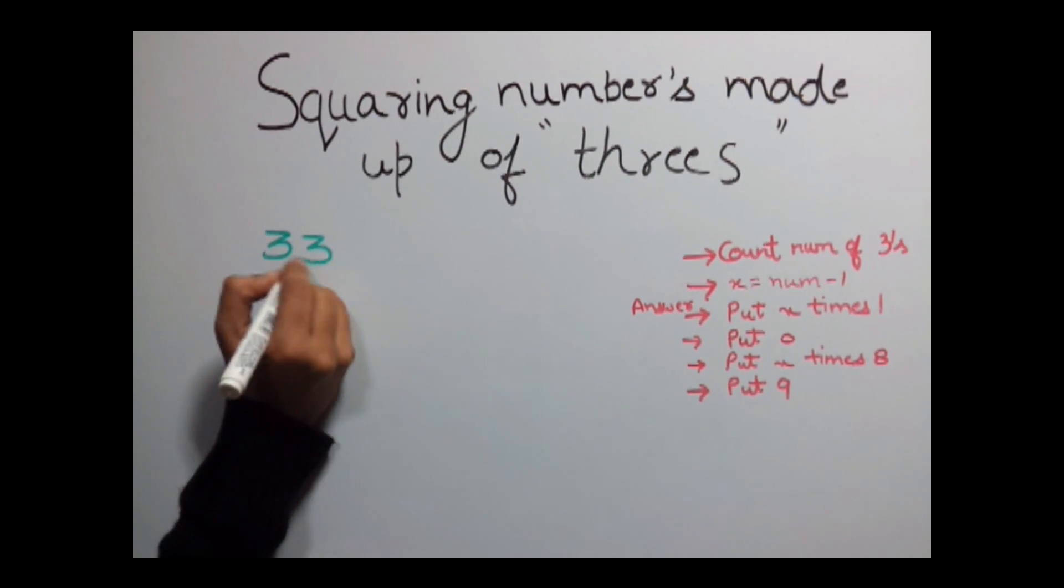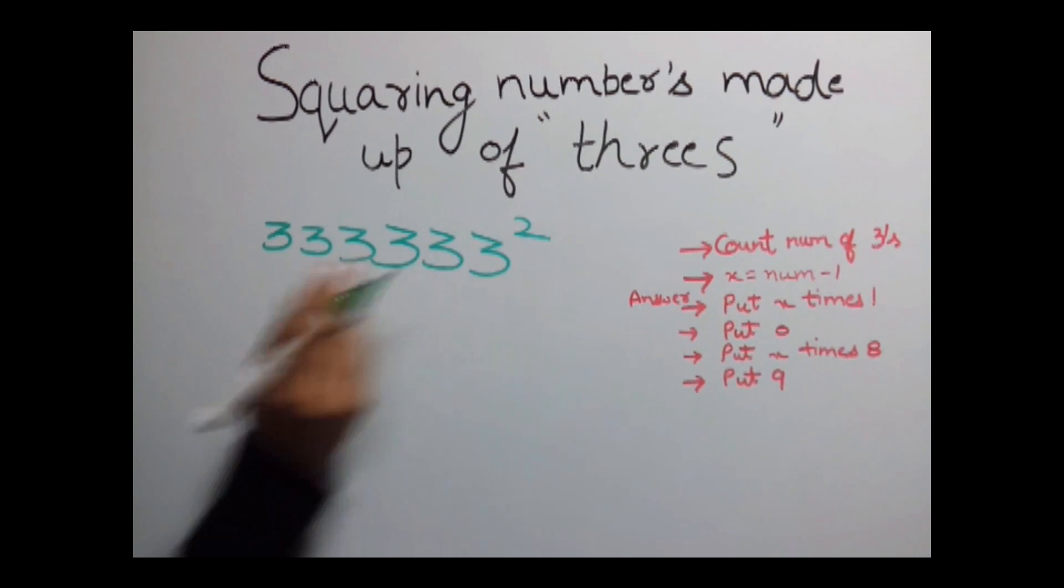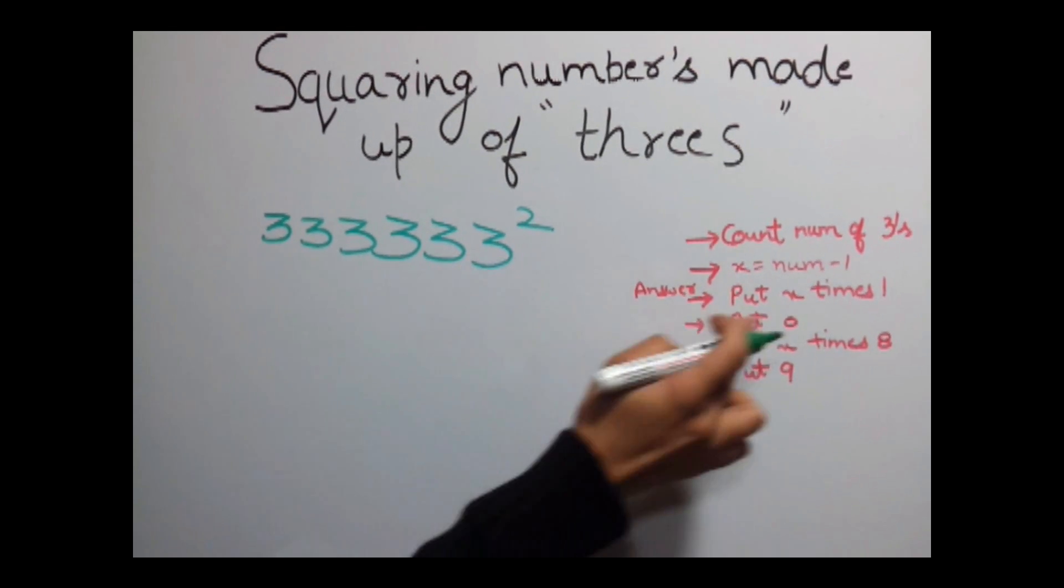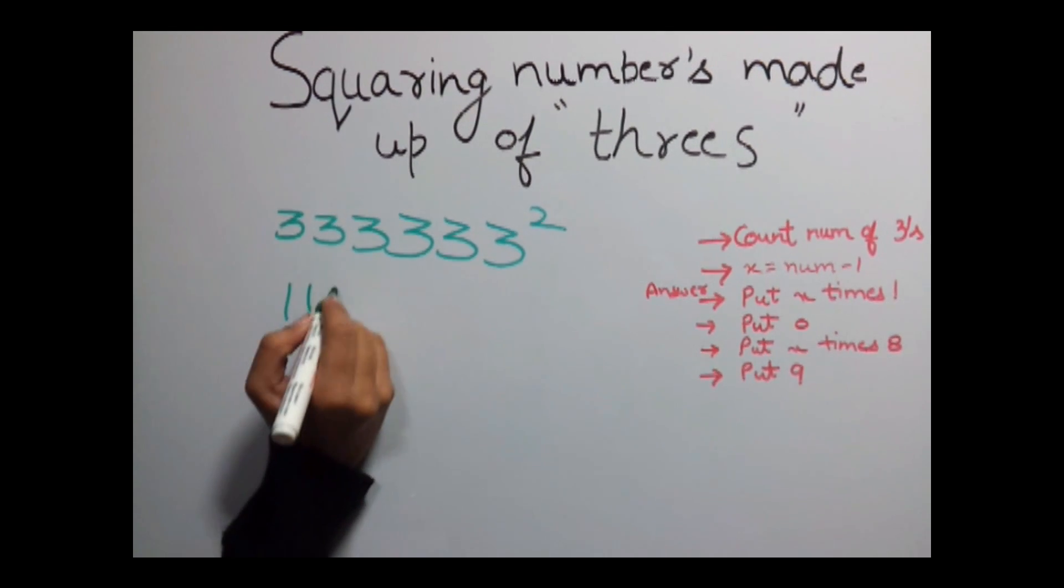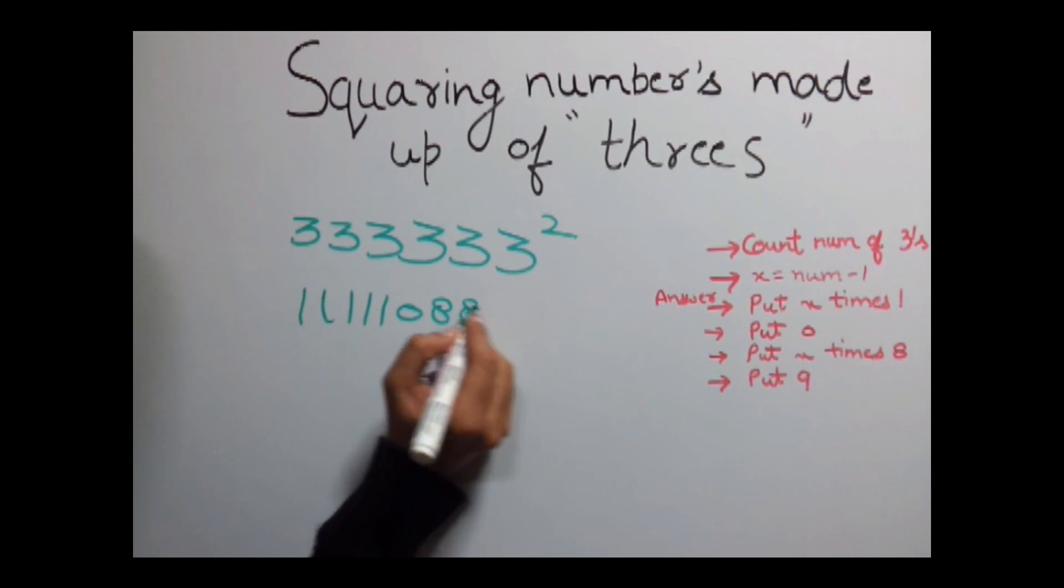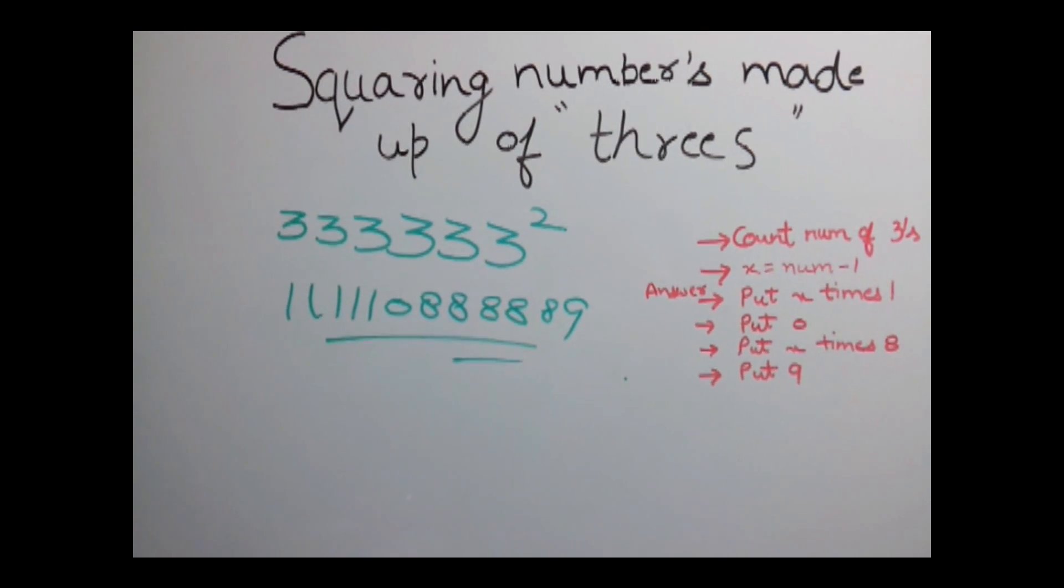Let's find out the square of this number. So here number of digits is 6. So our answer would be 5 times 1. Single 0. 5 times 8 and then 9.